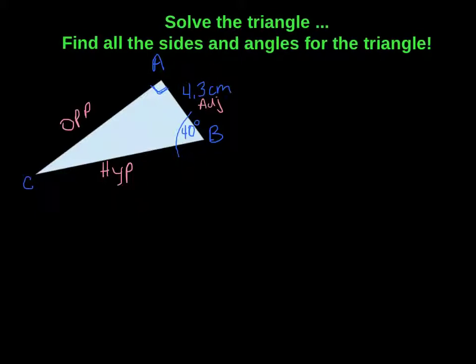Since we're going to be using opposite and adjacent, that means we are going to use our tangent ratio. So we've got tan 40 degrees, and that equals opposite over adjacent. So fill in what we know. We don't know our opposite, so let's call that x. And then our adjacent is 4.3.